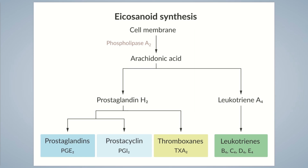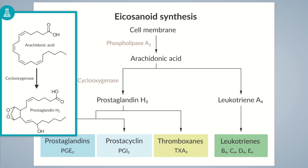The released arachidonic acid is converted to prostaglandin H2. The key enzyme involved in this conversion is cyclooxygenase. The prefix 'cyclo' indicates that the enzyme cyclizes arachidonic acid — it converts part of the molecule to a closed ring. In its function as an oxygenase, it incorporates oxygen into the molecule. There are two isoforms: cyclooxygenase 1 and cyclooxygenase 2, also termed COX-1 and COX-2.